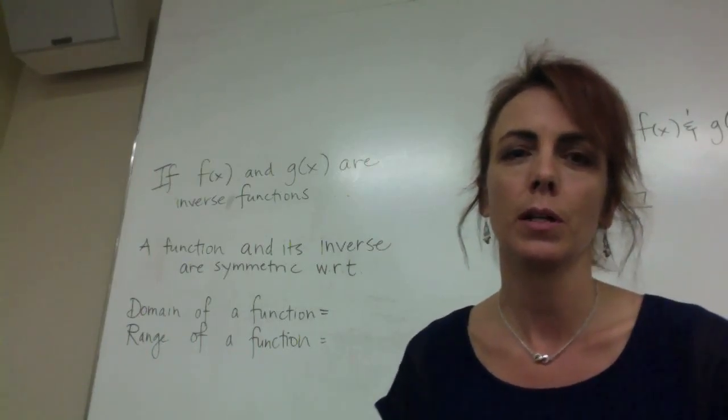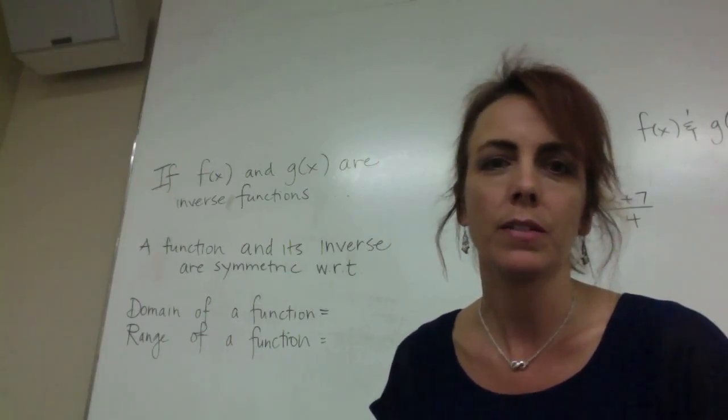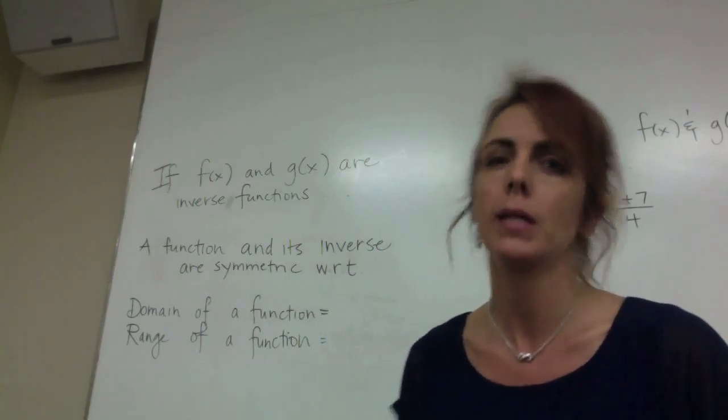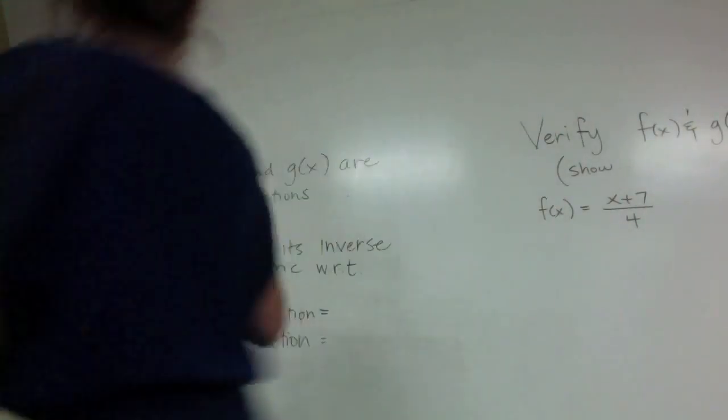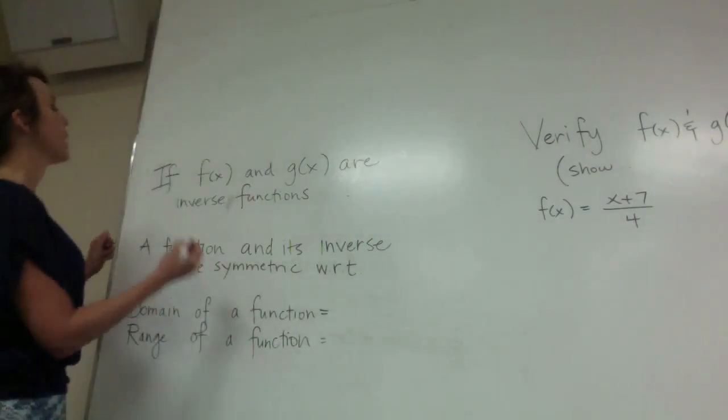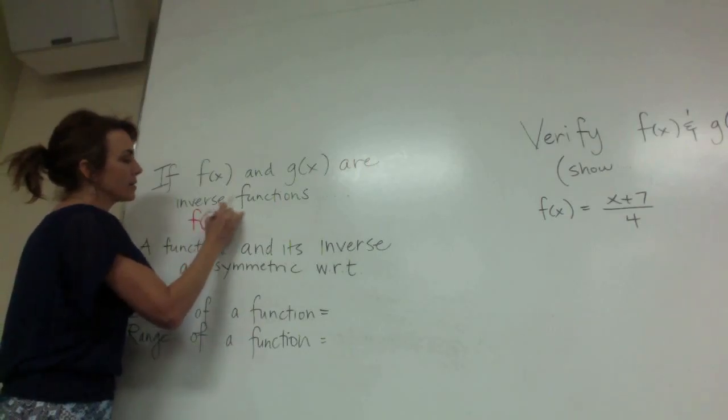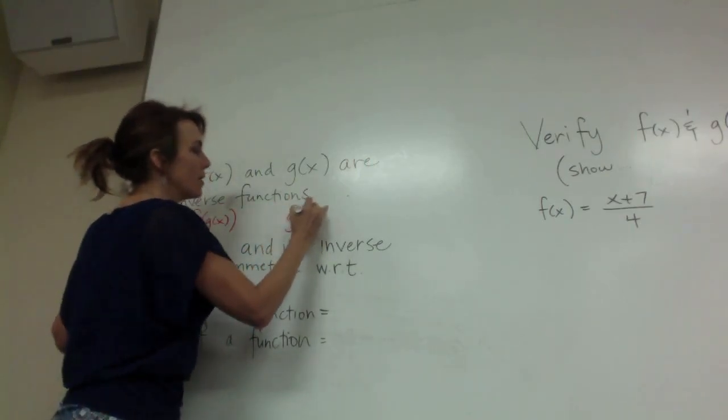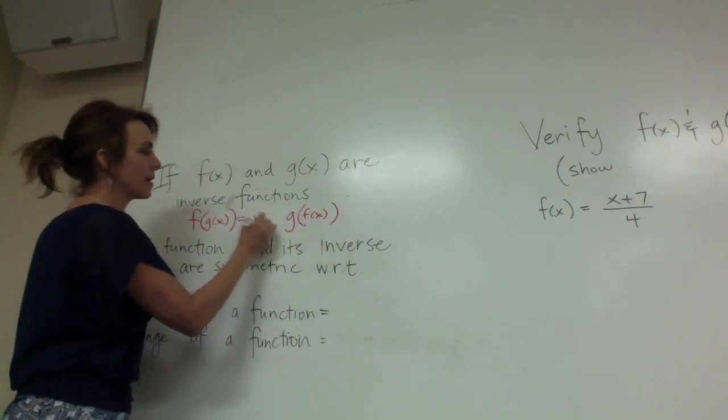So the first thing we're going to look at is definitional. Let's say I have f(x) and g(x), and I know that they are inverse functions. That would mean that if I compose them in either direction, I get something pretty cool: just x. If I take f(g(x)) and if I take g(f(x)), they're both equal to x.